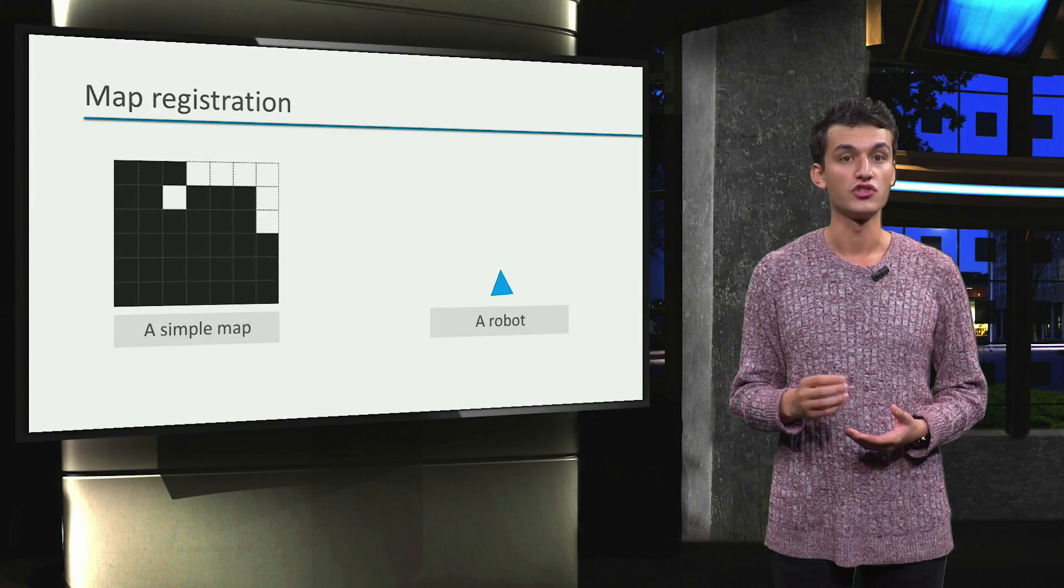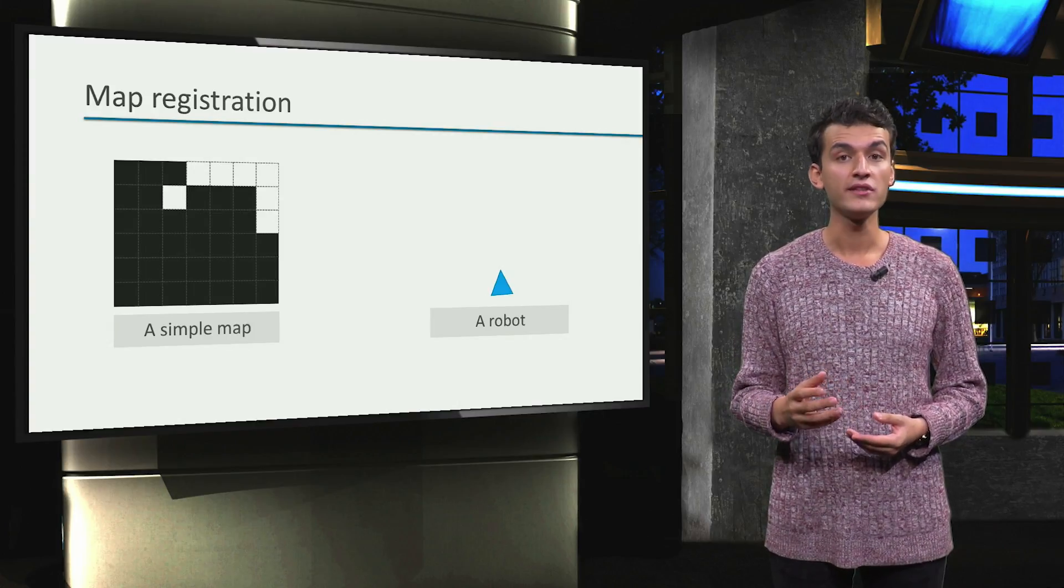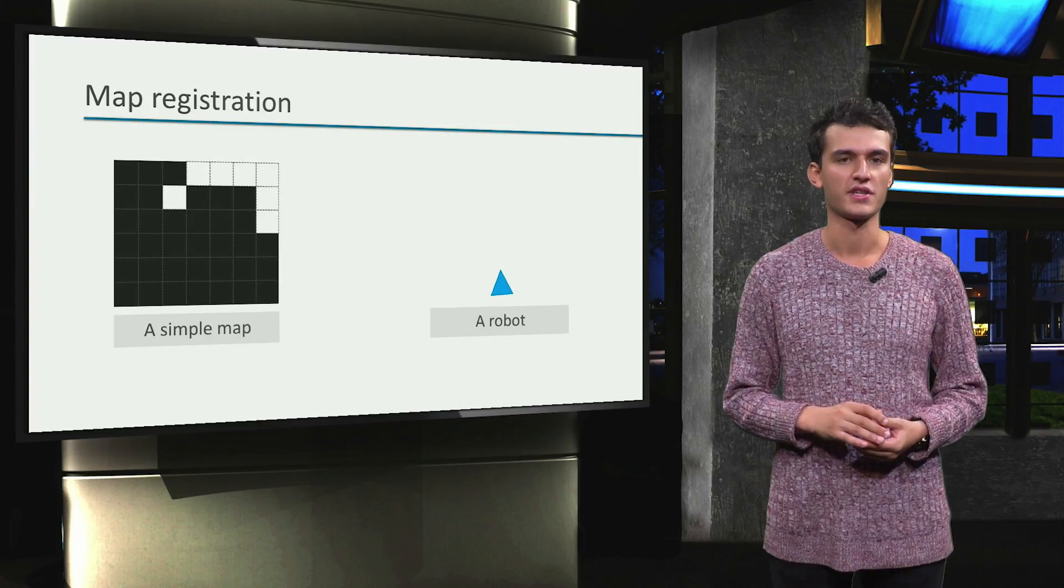This robot can use GPS for example, however in this case it's not handy. The few meters of accuracy is way too large in this case.